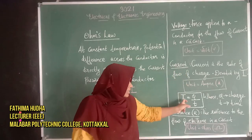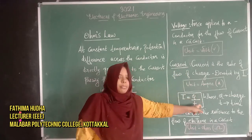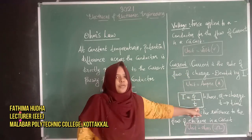The current I is equal to Q divided by T. This represents the rate of flow of charge.